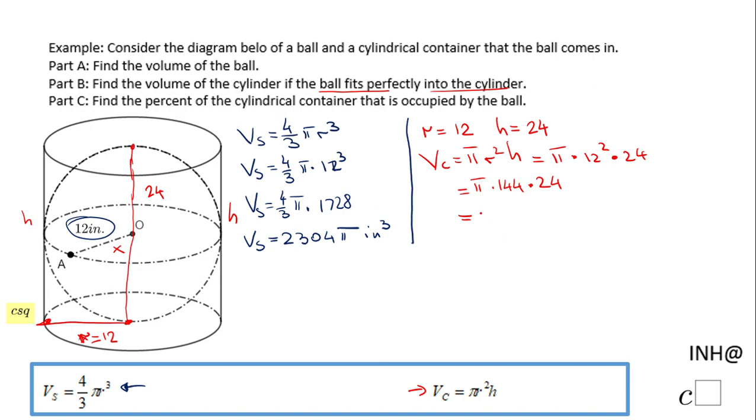This is the volume of the cylinder. Now we can move to part C. Part C asks us to find the percent of the cylindrical container that is occupied by the ball. The volume of the sphere is 2304π, the volume of the cylinder is 3456π. How do we find the percentage? Just divide 2304π by 3456π.